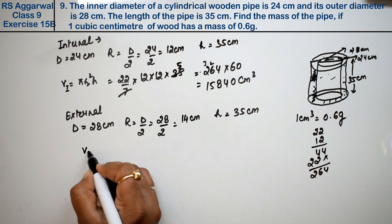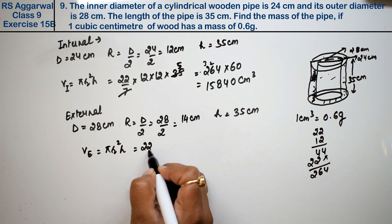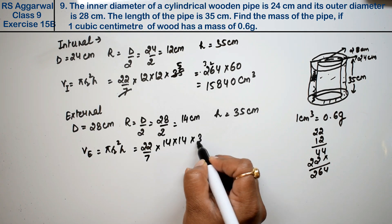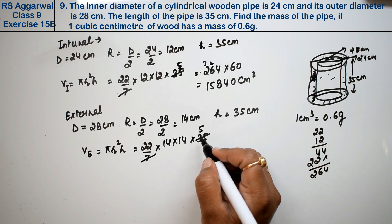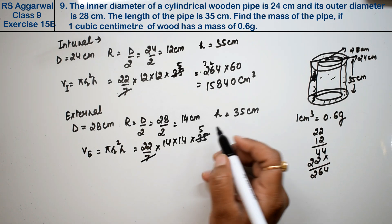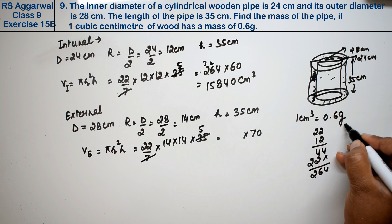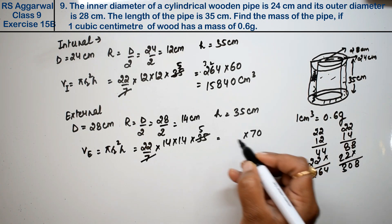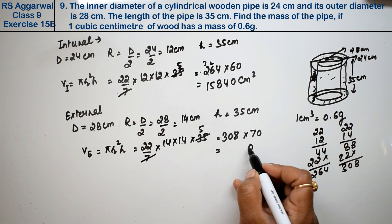So what is the volume? External volume, that is pi r squared h. So pi value is 22 upon 7, r is 14 squared so I'm writing it twice, and into 35. So 7 goes into 35, right, means see, 14 times 5 is 70, right. So we'll multiply 70.